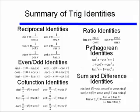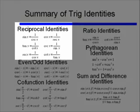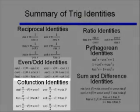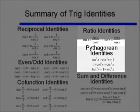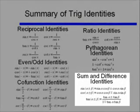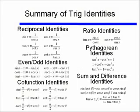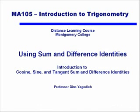Here we have the summary of all our trig identities: reciprocal identities, even and odd identities, co-function identities, ratio identities, Pythagorean identities, and lastly our sum and difference identities. Some of these identities will be given to you on your exam — I'll be sending out an email with your formula sheet so you know what you need to memorize and what you don't. And that's an introduction to using the sum and difference identities.